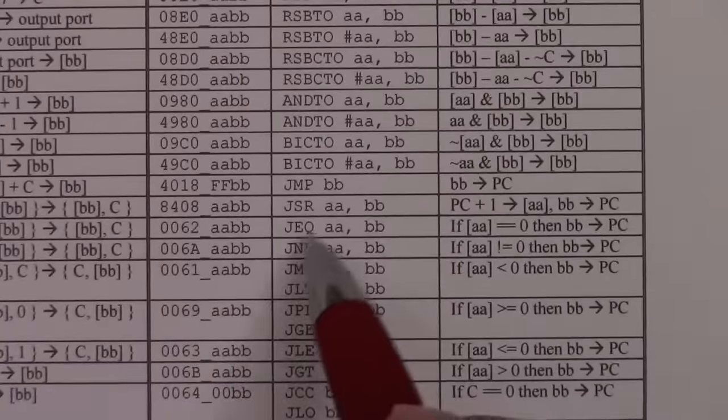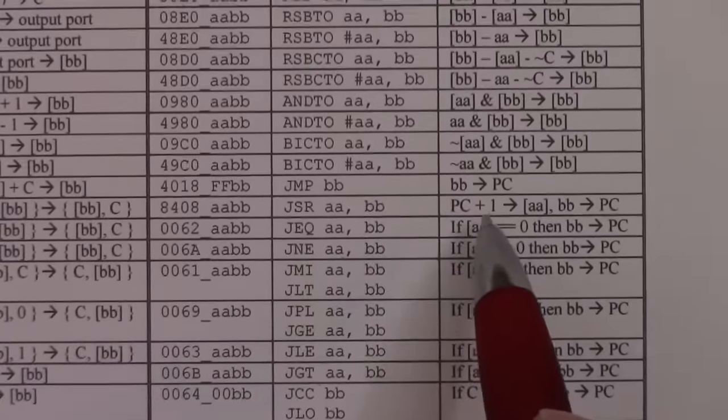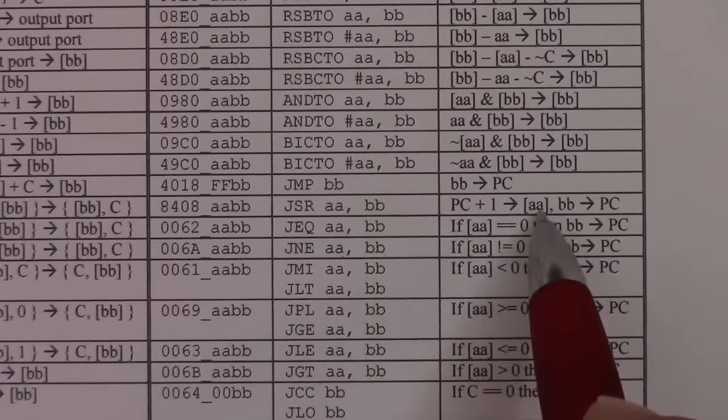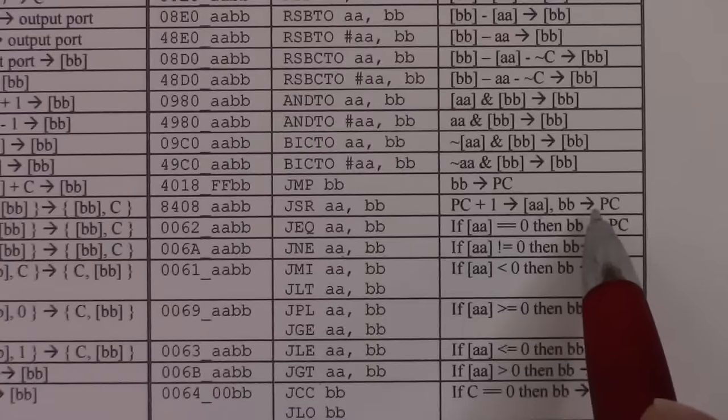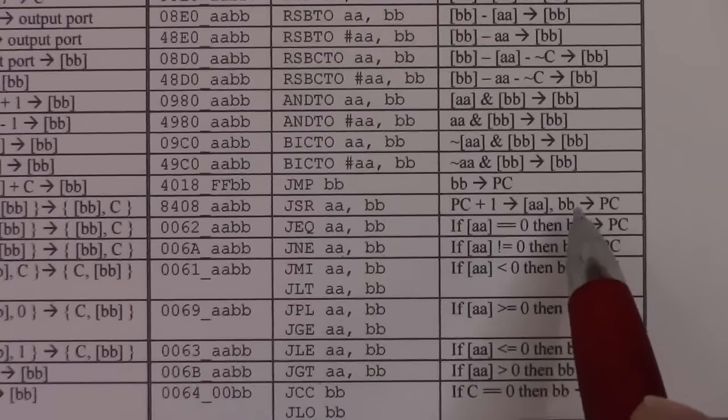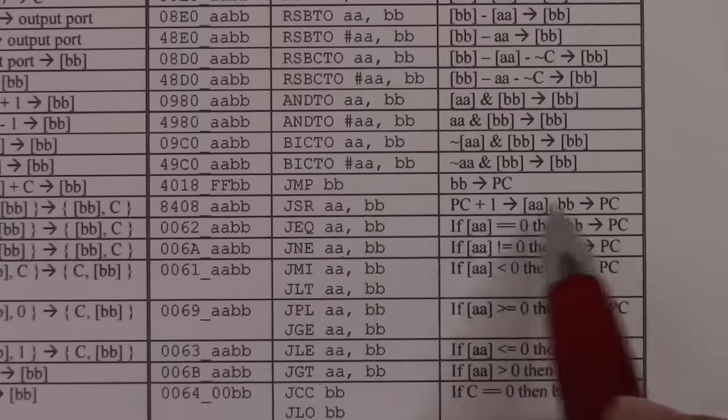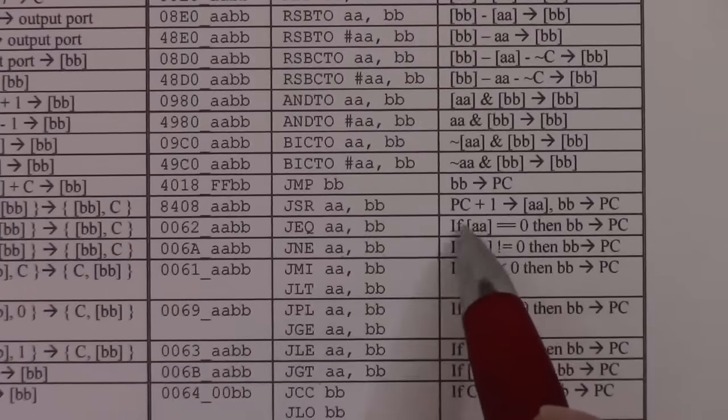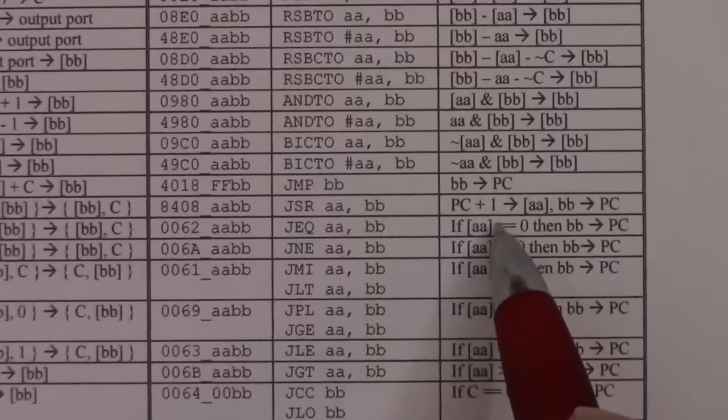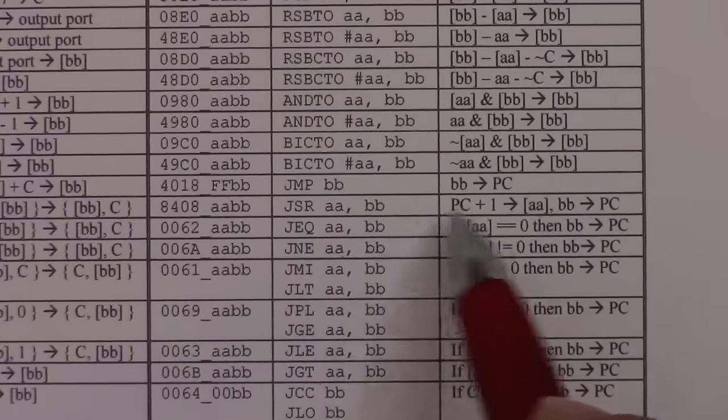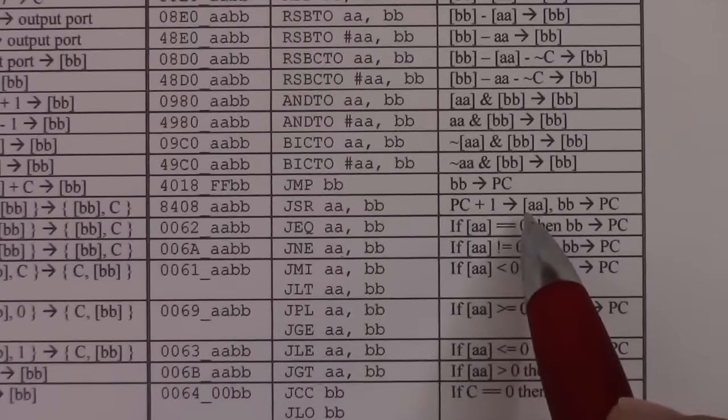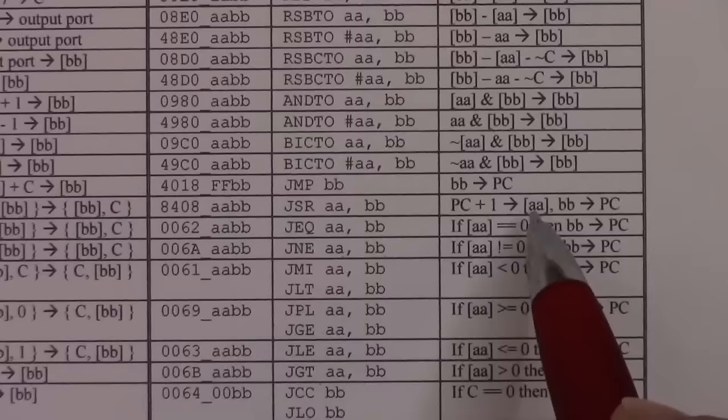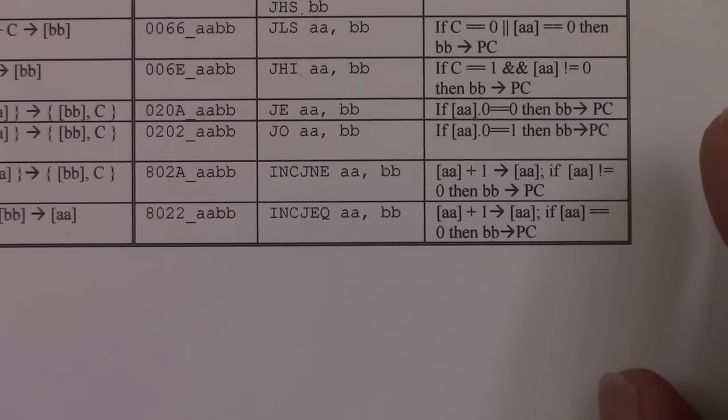Also, there's a jump to subroutine. Now what this does is kind of interesting. We save the return address in some memory location, AA, and then we jump to some other address, which is from BB. What's going on here is the way you make subroutines on the relay computer is to, at the end of the subroutine, you have a jump instruction. And you use this jump to subroutine to insert the return address into that jump instruction. This is a trick from early computers. And it avoids having to have a stack, a subroutine return stack. You can make a subroutine return stack, but it just is not built into the relay computer to save relays.